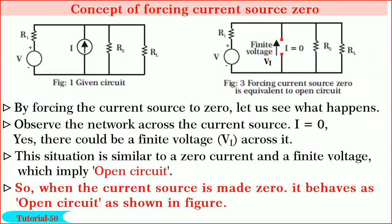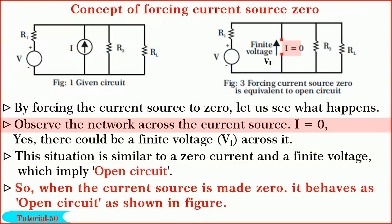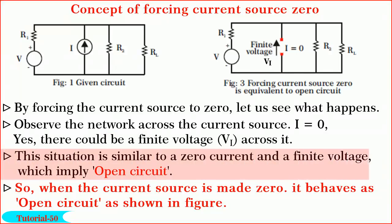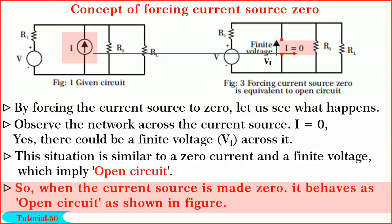Similarly, next consider the concept of forcing current source to zero. Consider the same network taken earlier as shown in figure by forcing current source zero. Let us see what happens. Observe the network where I is equal to zero but visualize that there could be a finite voltage across the current source due to other sources in the network. So, this situation is similar to a zero current and a finite voltage which implies open circuit. Hence, when the current source is forced to zero, it is equivalent to open circuit as shown.